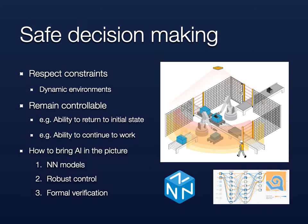In order to bring AI into the picture, we have formalized a set of requirements that include the ability to return to the system's initial state and, more generally, the ability to continue to work. The motivation for using AI is that classic control theory can sometimes be too conservative. We wish to bring in the flexibility of neural network technology while retaining similar guarantees to those of the established methods.